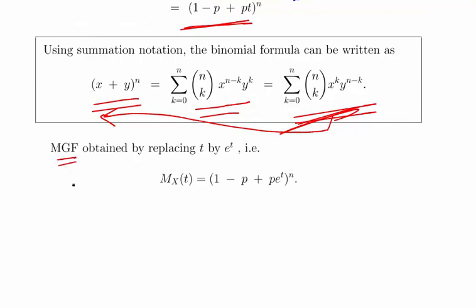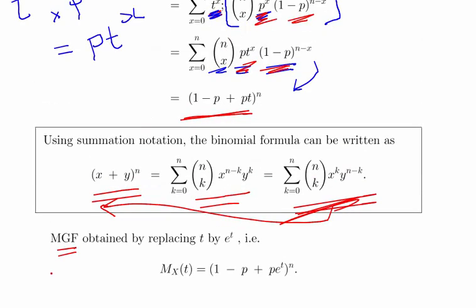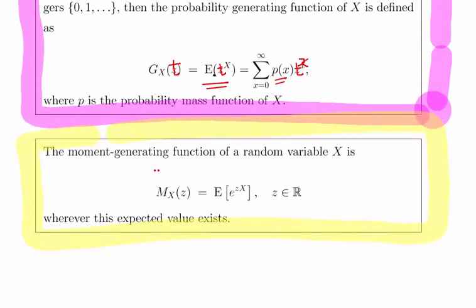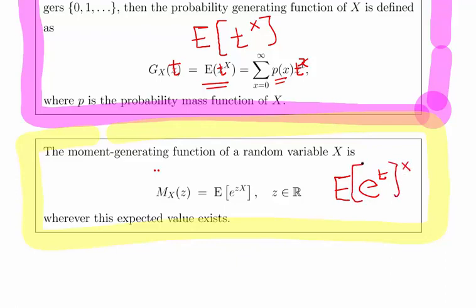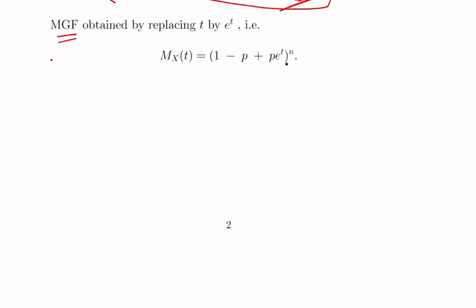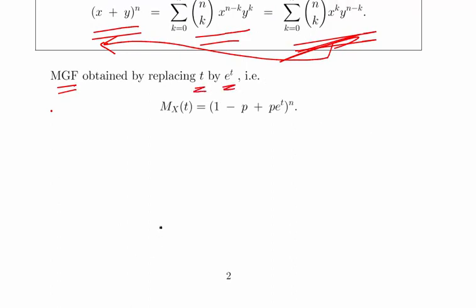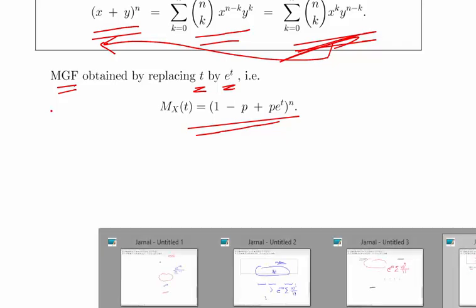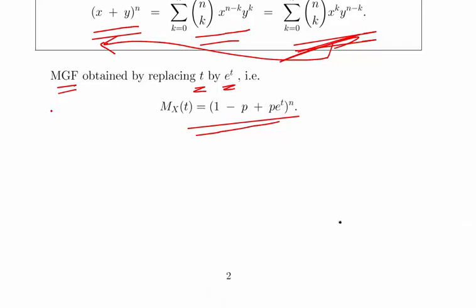Now we're also asked for the moment generating function, the MGF, and that's a very straightforward job in this instance. For the PGF we found the expected value of t to the power of x; for the MGF we need the expected value of e to the power of t times x. So we simply replace t by e to the power of t — that's a very straightforward substitution. That is the binomial distribution and how to calculate the probability generating function and the moment generating function.